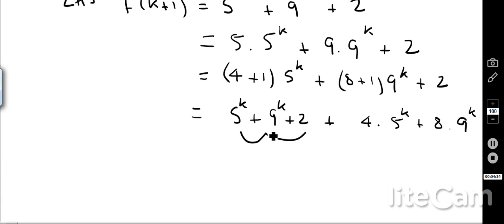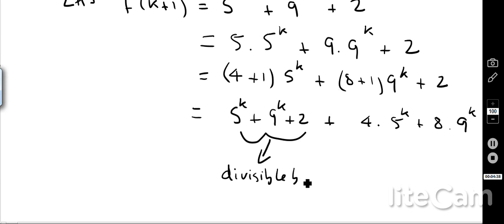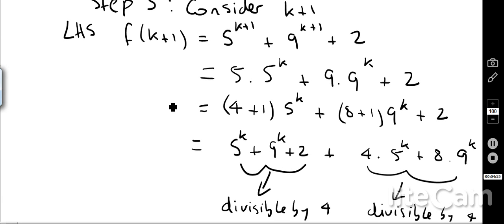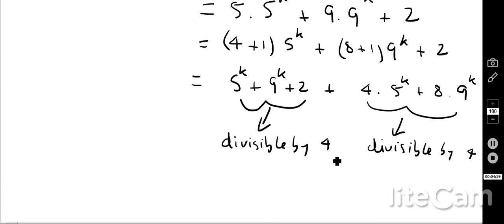The reason I did that is because the term 5 to the k plus 9 to the k plus 2 is exactly the bit I already assumed is divisible by 4. And the remaining term — 4 times 5 to the k plus 8 times 9 to the k — is also divisible by 4 because it has a factor of 4 in both terms. Therefore f(k+1) is divisible by 4.